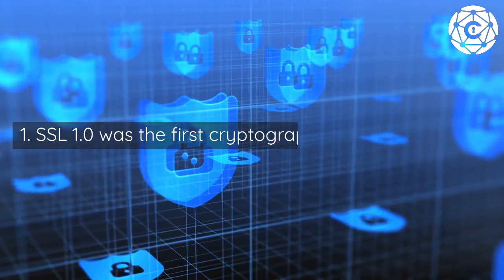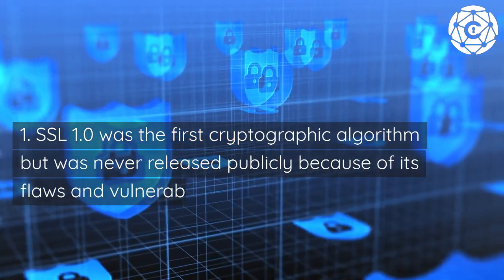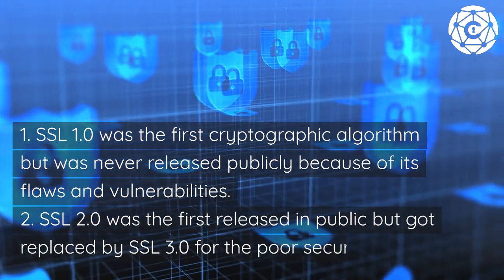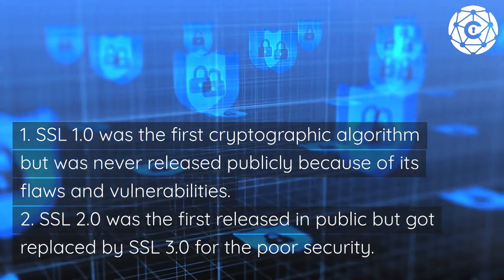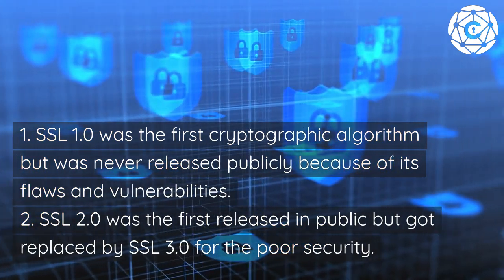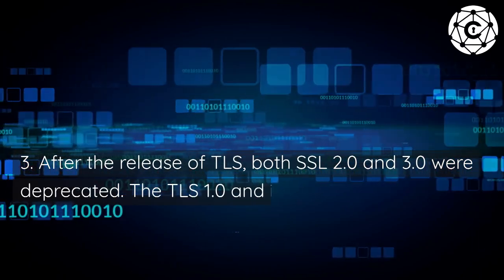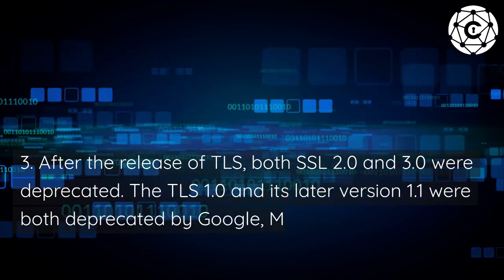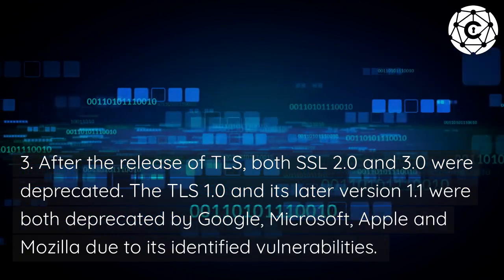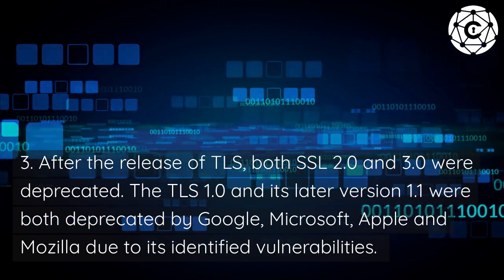Is HTTPS protocol secure? 1. SSL 1.0 was the first cryptographic algorithm, but was never released publicly because of its flaws and vulnerabilities. 2. SSL 2.0 was the first released to the public, but got replaced by SSL 3.0 for poor security. 3. After the release of TLS, both SSL 2.0 and 3.0 were deprecated. TLS 1.0 and its later version 1.1 were both deprecated by Google, Microsoft, Apple, and Mozilla due to identified vulnerabilities.